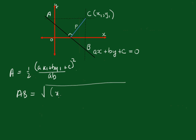and that will be x1 minus, minus by1 minus c on a, that's going to be all squared, plus y1 minus, minus ax1 minus c on b all squared.